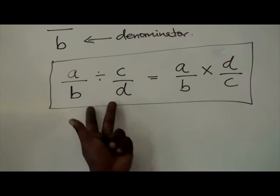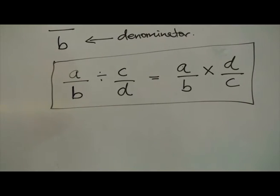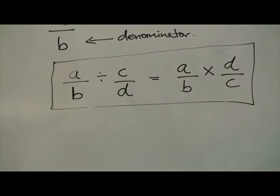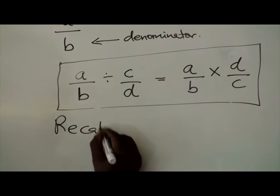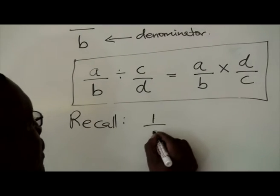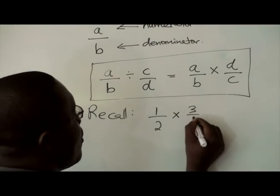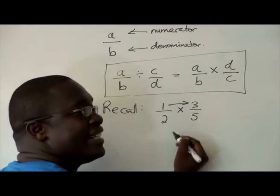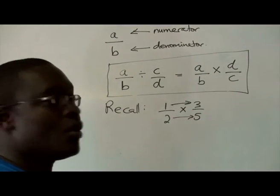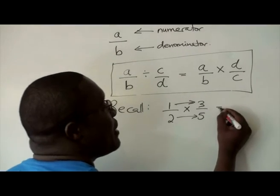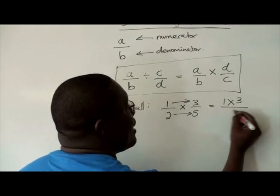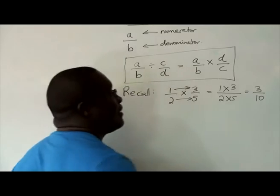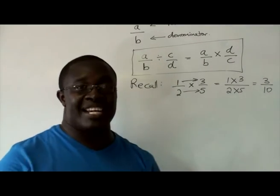Now, before we go into division, let's just do a recap of multiplication so that we'll be able to know what to do after converting it into multiplication. Recall that 1 over 2 times 3 over 5 — if you're multiplying fractions, it's going to be numerator times numerator, denominator times denominator. So in this case, it will be equal to 1 times 3 divided by 2 times 5, which is 3 out of 10. That is how you multiply fractions.